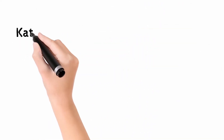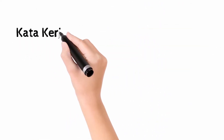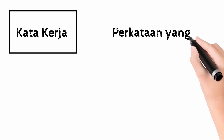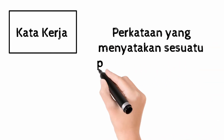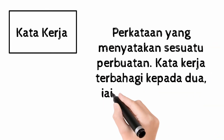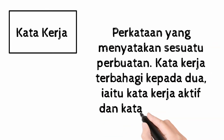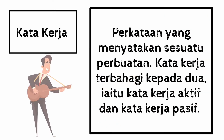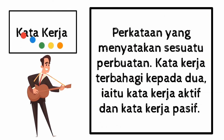Mari kita lihat definisi bagi kata kerja. Kata kerja adalah perkataan yang menyatakan sesuatu perbuatan. Kata kerja terbahagi kepada dua iaitu kata kerja aktif dan kata kerja pasif.